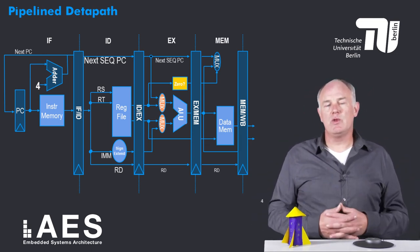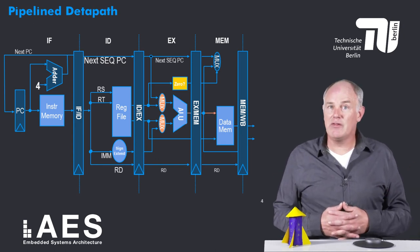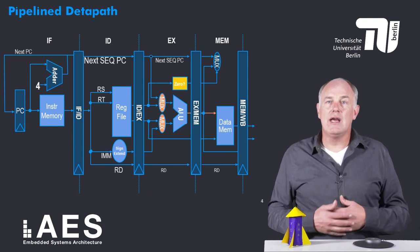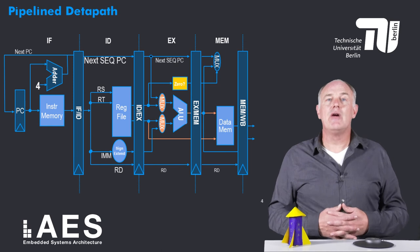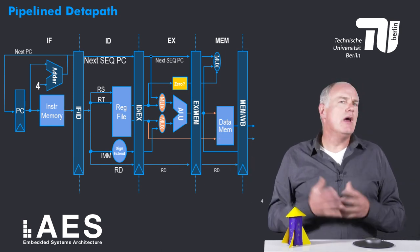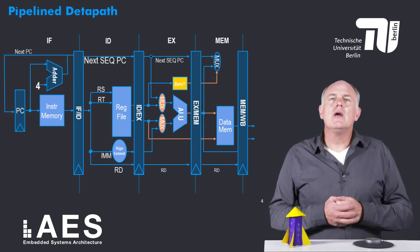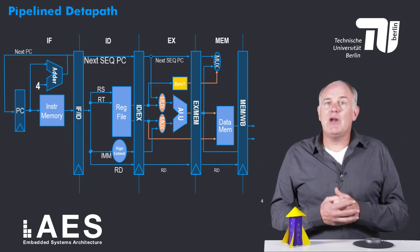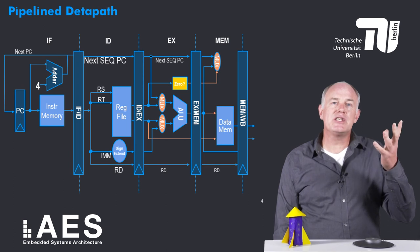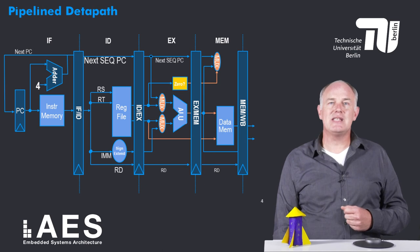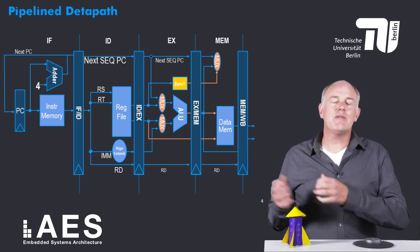This part of the data path corresponds to the memory access stage, the MEM stage. Loads and stores access memory using the effective address calculated in the previous stage. If the instruction is a store, the data to be stored is on this line. If the instruction is a load, the data loaded is latched into the MEM/WB pipeline register at the end of the cycle. Branches also complete in this cycle — if the outcome of the zero test in the previous cycle is true, indicating that the branch should be taken, this multiplexer does not select PC plus 4 as the next program counter but the branch target address computed by the ALU in the previous stage. If the instruction is an R-type instruction such as add or subtract, the ALU result is simply routed around the data memory.